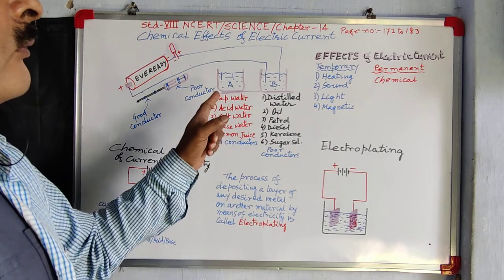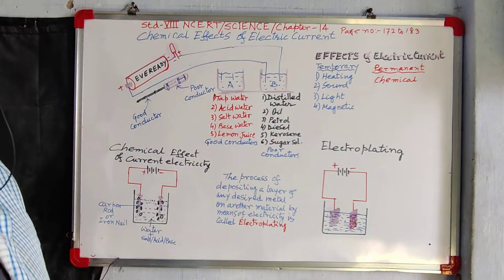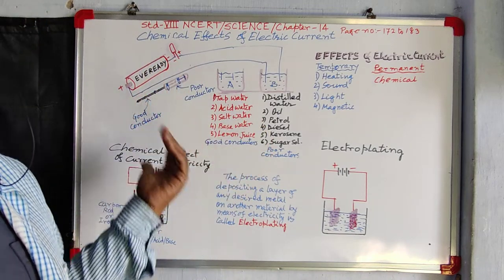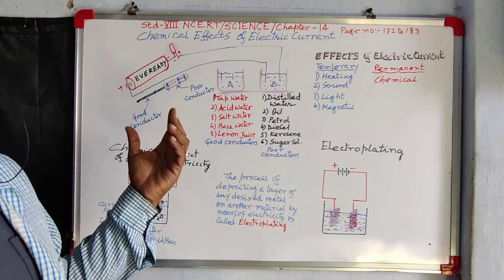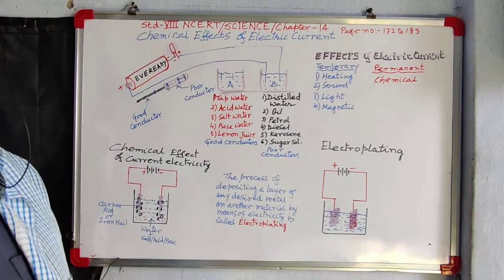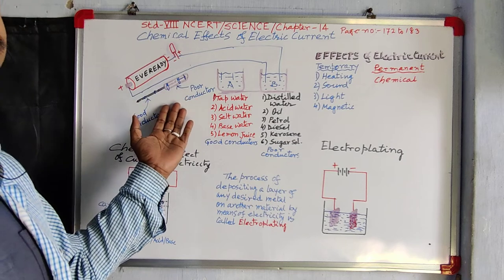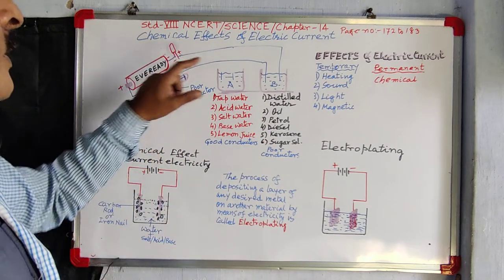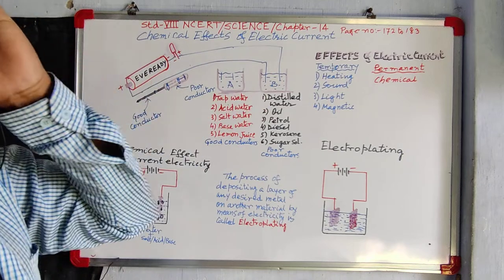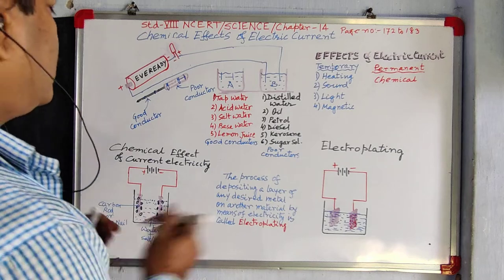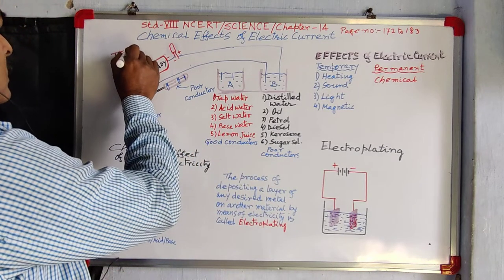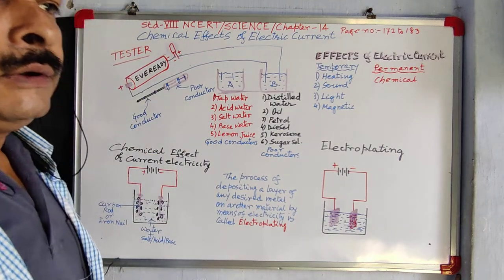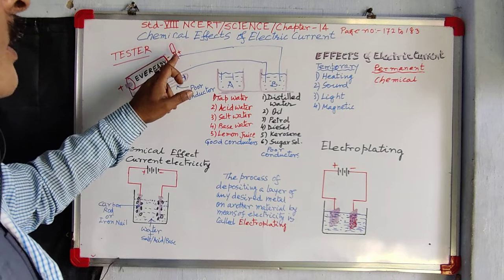These testers are very useful to find out whether some solid substance or liquid substance is a good conductor — allowing electricity to pass through it — or not allowing electricity. Whether it is a solid substance or a liquid substance, the testing method will be the same. This circuit arrangement is called a tester. We have seen two kinds of tester: one is bulb tester, and now it is LED tester.